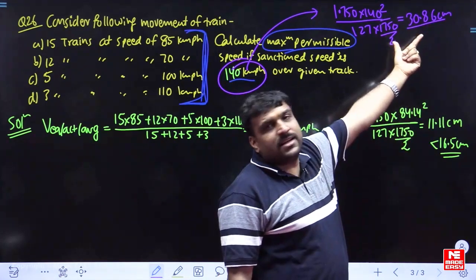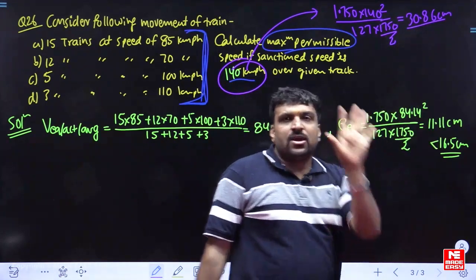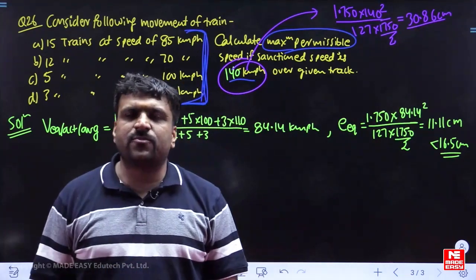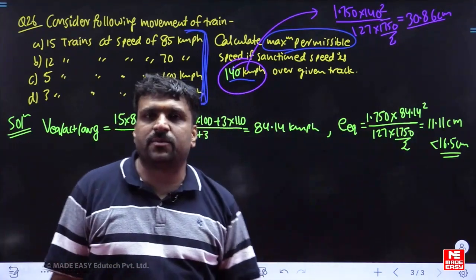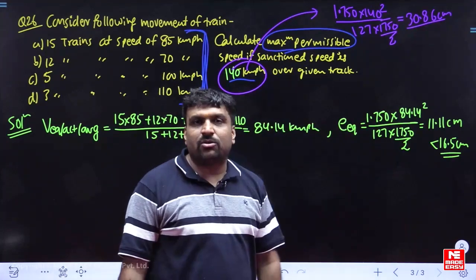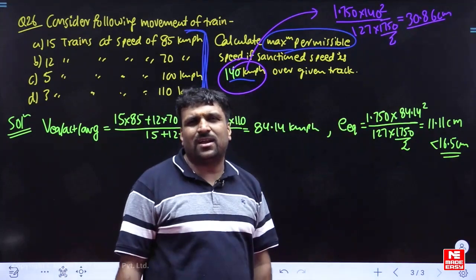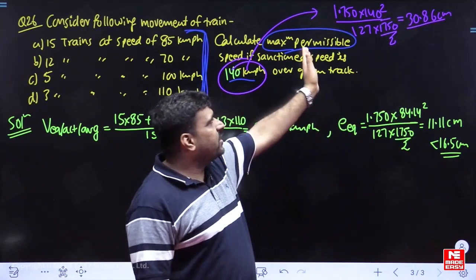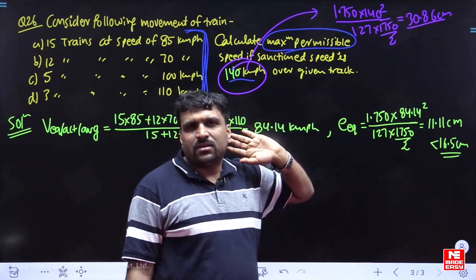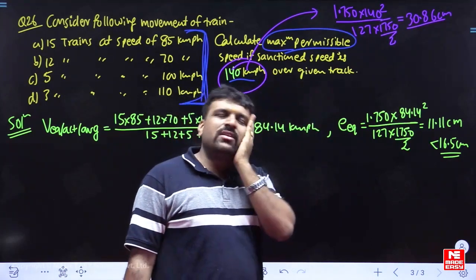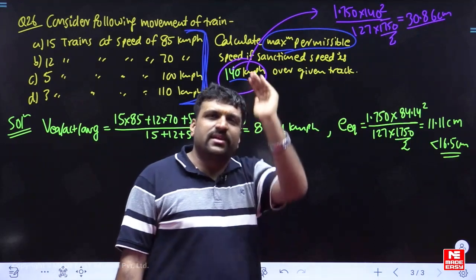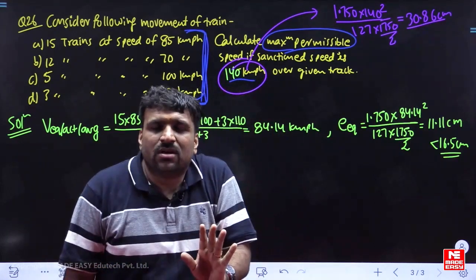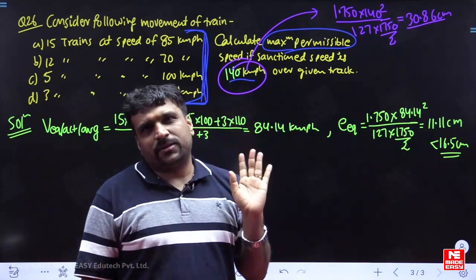The demand is 31 centimeters, but you have provided only 11 centimeters. What is the deficiency it is facing? 20 centimeters — more than permissible. It means this train cannot come inside. What does this train have to do? It has to reduce its speed up to the value of the permissible limit.